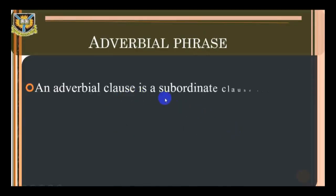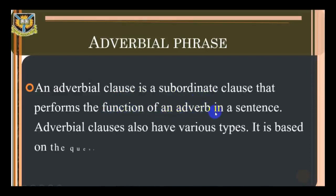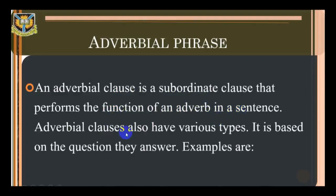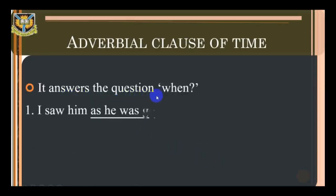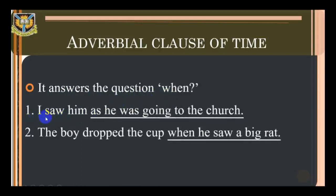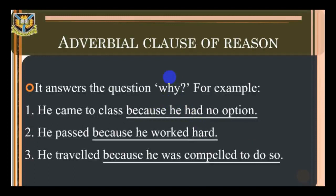Adverbial clause: an adverbial clause is a subordinate clause that performs the function of an adverb in a sentence. It has various types based on the question they answer. Adverbial clause of time answers the question 'When?' For example: 'I saw him as he was going to church.' 'The boy dropped the cup when he saw the big rat.' Adverbial clause of reason answers 'Why?' For example: 'He came to class because he had no option.' 'He passed because he worked hard.' 'He travelled because he was compelled to do so.'